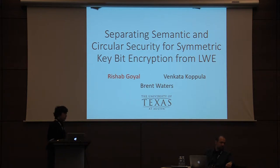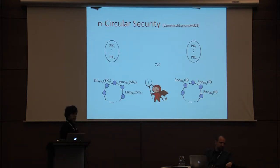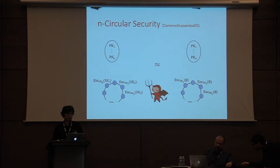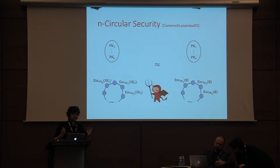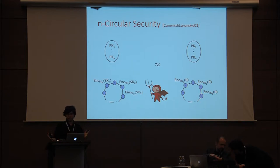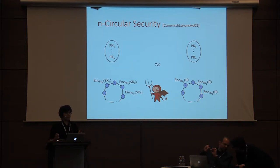First, let's talk about public encryption. Recalling public encryption, semantic security says that if the adversary doesn't know a secret key, it basically cannot distinguish between encryption of two different messages. But it doesn't say what happens if the adversary has some partial information about the secret key.